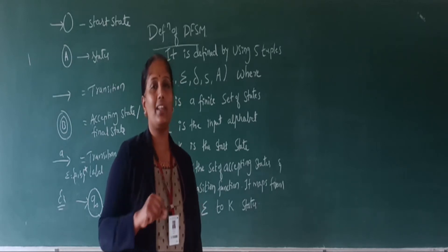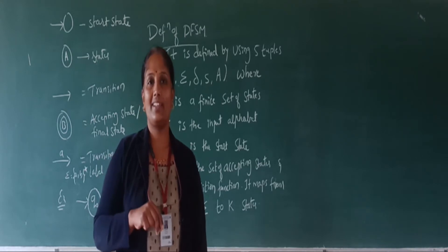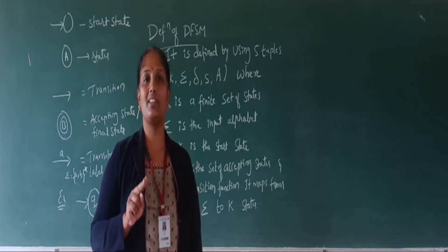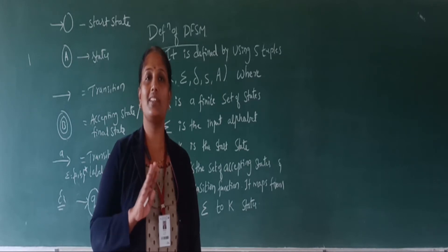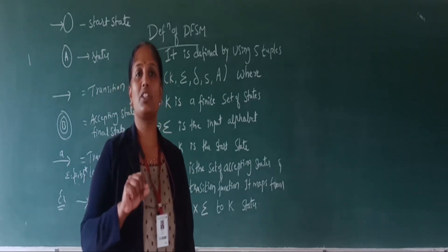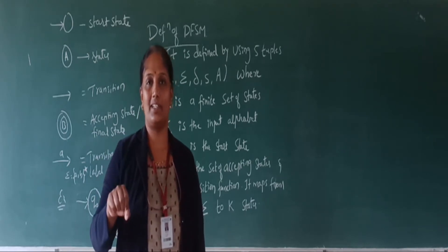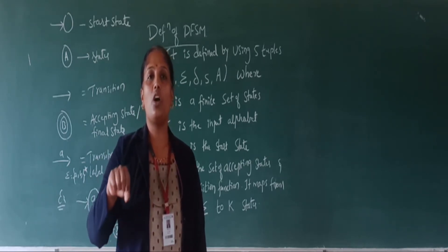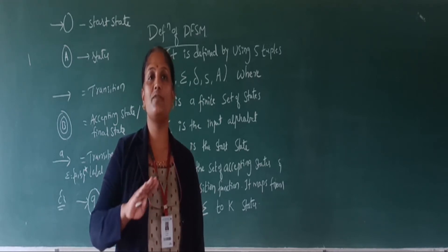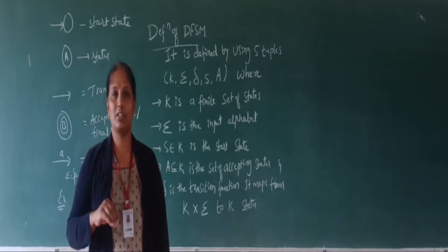Another example of a deterministic finite state machine is a fan. Initially, assume the fan is in an idle state, meaning it is in off mode. When I press the switch button, the machine moves from the off state to the on state. Moving to the on state is fixed and determined. These are some examples of a deterministic finite state machine.